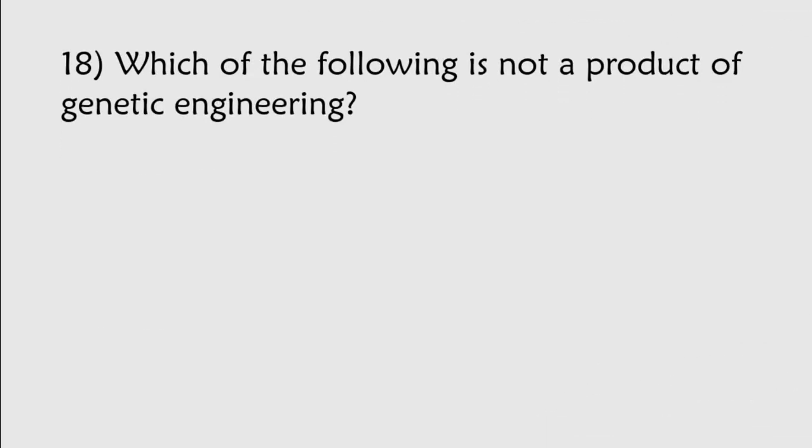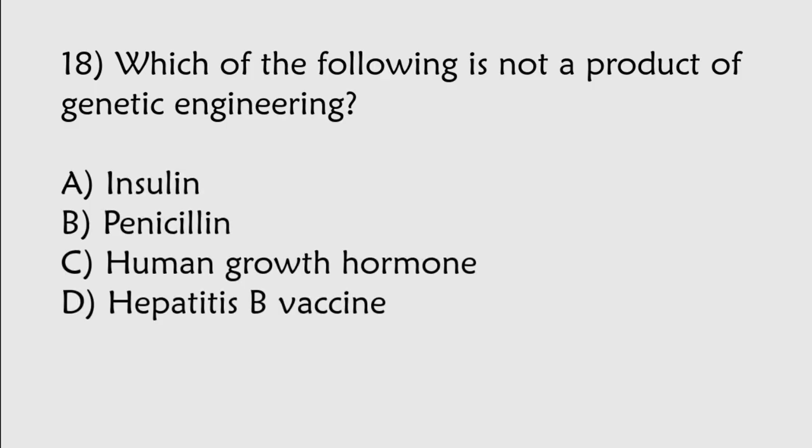Which of the following is not a product of genetic engineering? Insulin, penicillin, human growth hormone, Hepatitis B vaccine. Correct answer is Option B, penicillin.